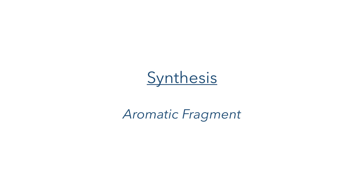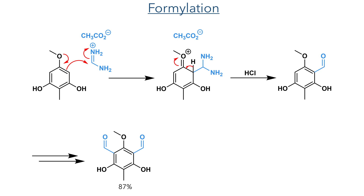So let's move on and look at the synthesis of the aromatic fragment. This started with dimethyl fluoroglucanol, which was first formylated with formamidine acetate. This compound can undergo electrophilic aromatic substitution as the aromatic ring is quite activated due to the methoxy and phenol groups. This attacks the formamidinium ion, which forms a cationic intermediate that rapidly loses a proton to restore aromaticity. The diamine is then hydrolyzed by hydrochloric acid, generating the formyl group. This substitution occurs twice and produces the dialdehyde in an 87% yield.